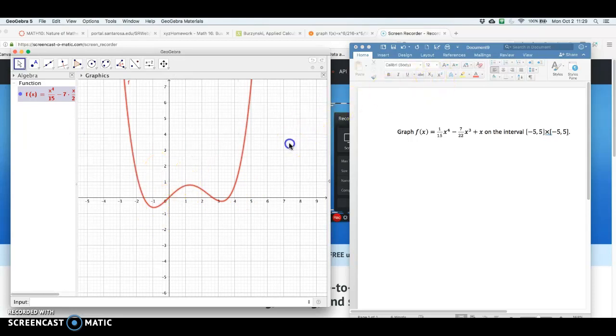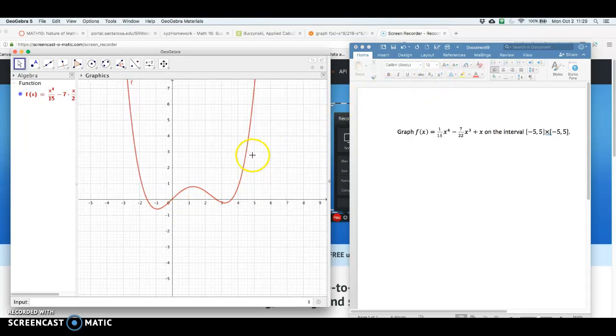So a couple of options we could do right here. If I want to make sure the interval is minus 5 to 5, and minus 5 to 5 for x and y, I don't quite have that.